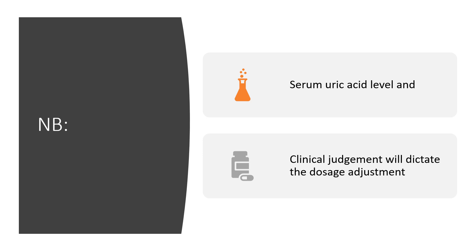Note that at 0.15 mg/kg, you have to assess the serum uric acid level and make clinical judgment. Both the serum uric acid level and clinical judgment will dictate dosage adjustment. Since we are dealing with human beings who have a dynamic system, we cannot just dogmatically say this is the dosage — the serum uric acid level and clinical judgment will dictate the dosage adjustment.